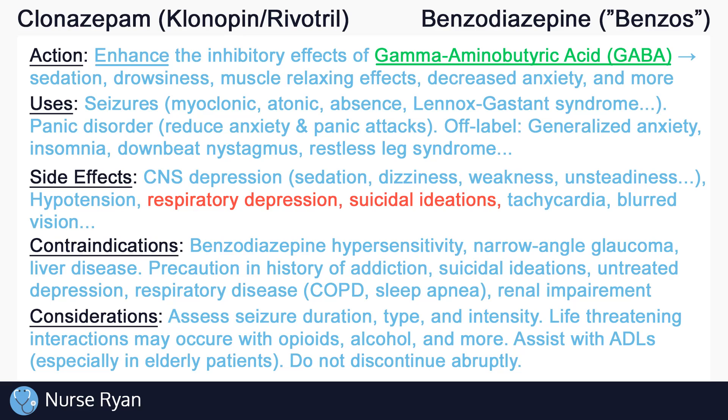Lastly, for the treatment of overdose, a benzodiazepine antagonist such as flumazenil may be used as an antidote. Flumazenil blocks or inhibits GABA receptors, reducing the symptoms of overdose.